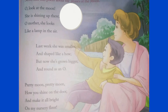The poem talks about the moon being small one week and then growing bigger and as round as an O. So in this poem, the poet is describing the change from new moon to full moon.